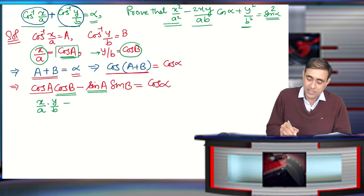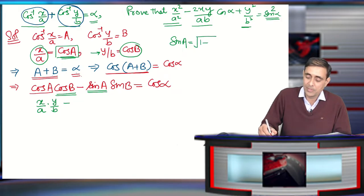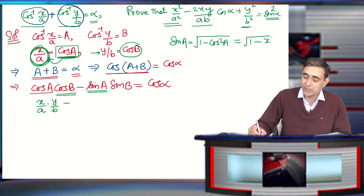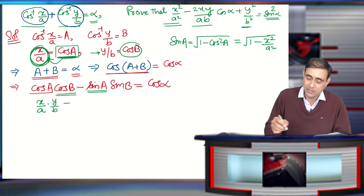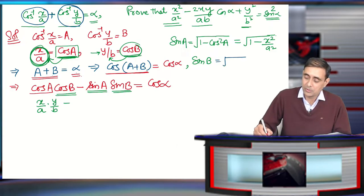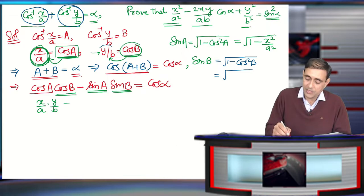Since cosA = x/a is given, sinA = √(1 − cos²A) = √(1 − x²/a²). Similarly, cosB = y/b, so sinB = √(1 − cos²B) = √(1 − y²/b²).